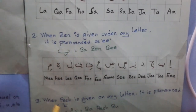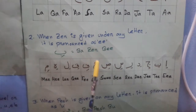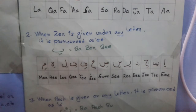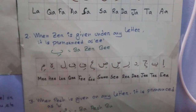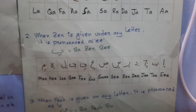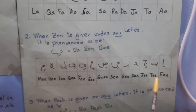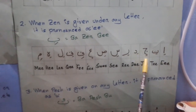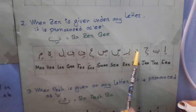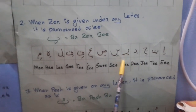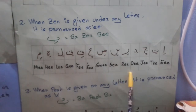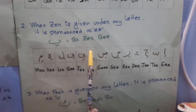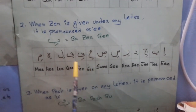Number 2: when Zayr is given under any letter, it is pronounced as E. Like: Ba — Zayr — Bi; Dal — Zayr — Di; Ra — Zayr — Ri; Sin — Zayr — Si; Swad — Zayr — Si; Ain — Zayr — I; Fa — Zayr — Fi.